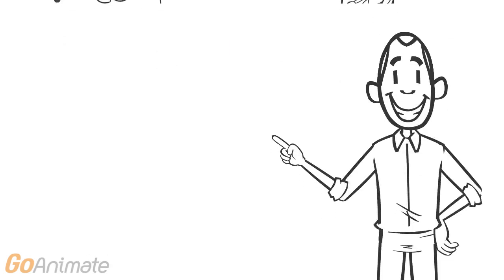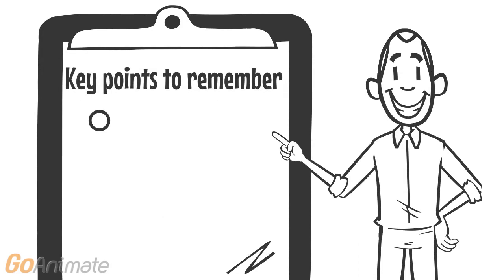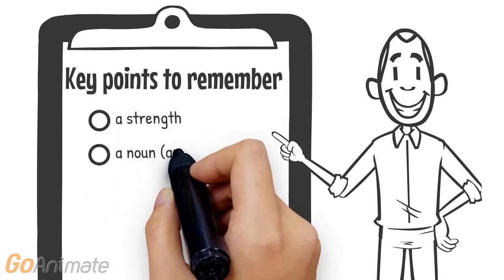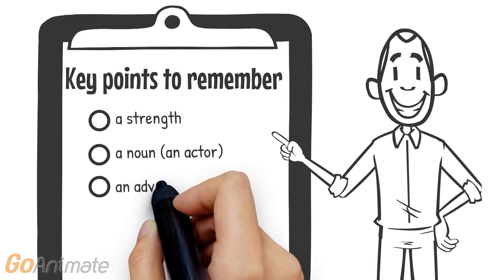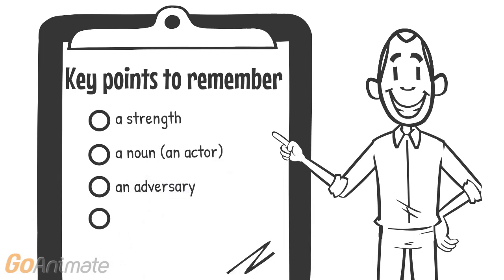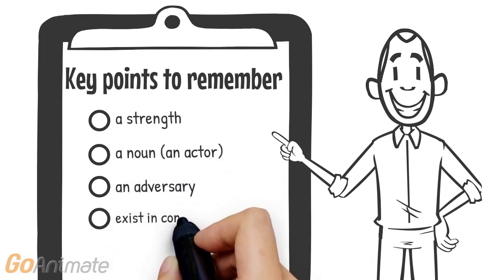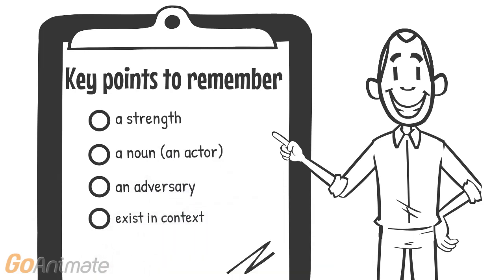In other words, a center of gravity is always a strength, not a weakness. It is an adversarial actor trying to achieve his desired end state while denying you the ability to achieve yours. It exists in context, meaning that a different center of gravity may exist for each phase of an operation or with a change of operation.